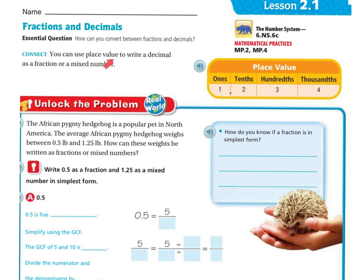Connect. You can use place value to write a decimal as a fraction or a mixed number. So looking at our place value, we have our ones place, and we have our decimal. After our decimals are tenths, hundredths, and thousandths.